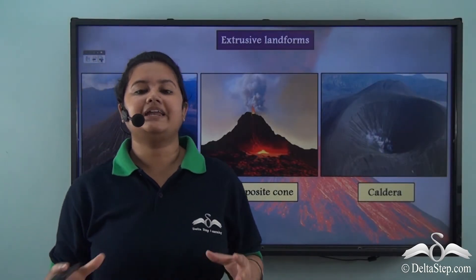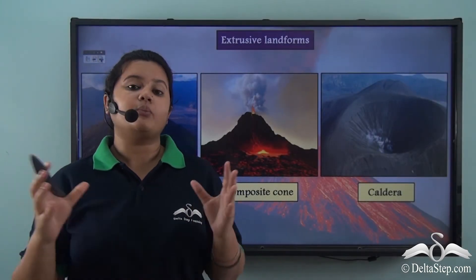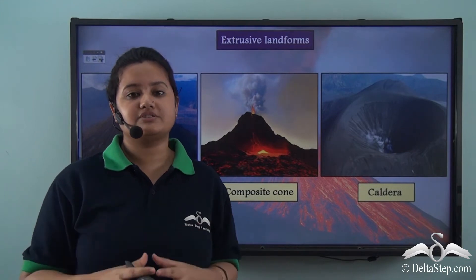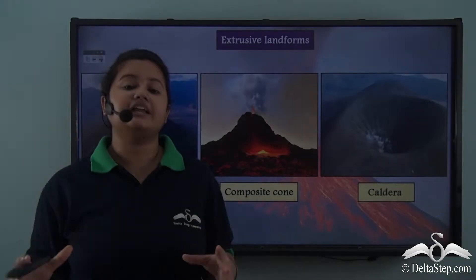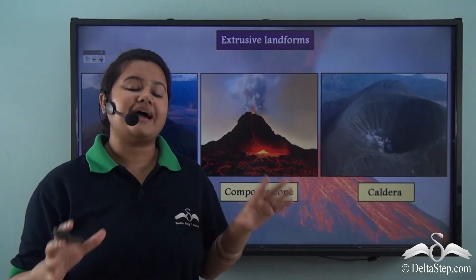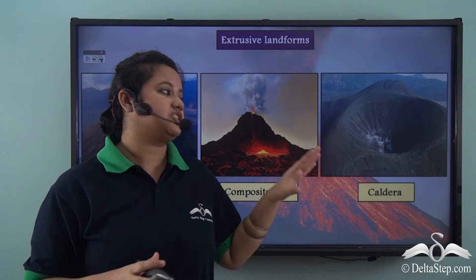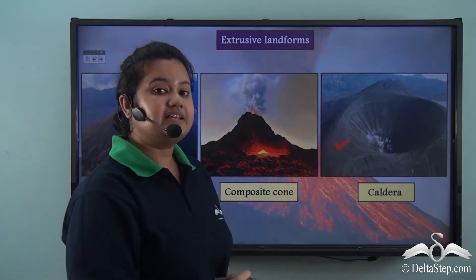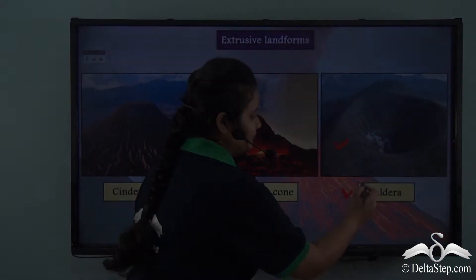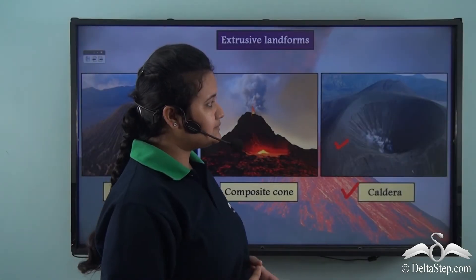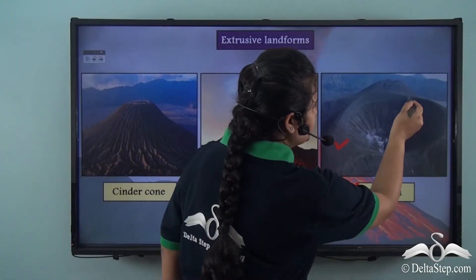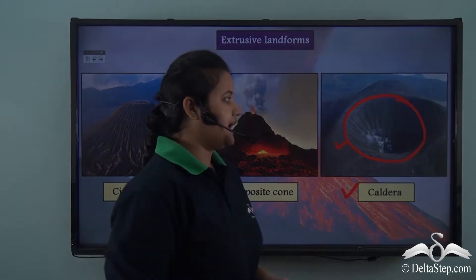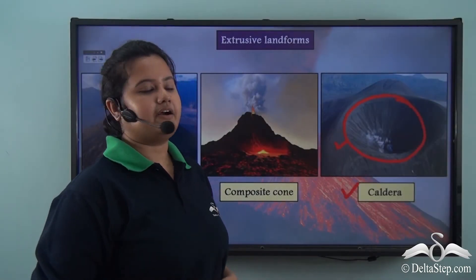During a volcanic eruption, when lava and other volcanic materials come out of the earth's surface under huge pressure, a massive depression is formed on the earth's surface and this is known as a caldera. In this picture we can see a circular depression created by a volcano — this is a caldera.